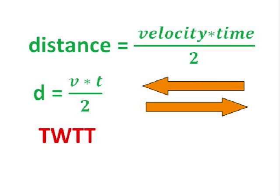To calculate TWTT, we write, little d equals V times T divided by 2.